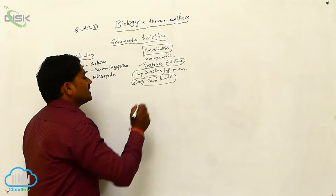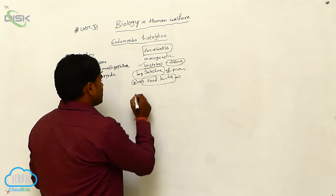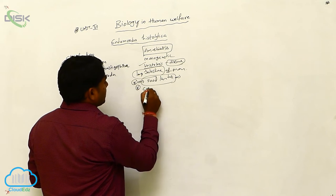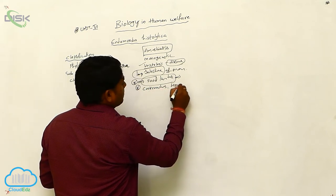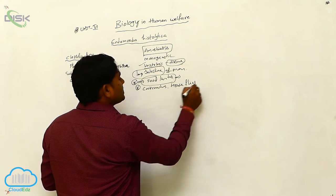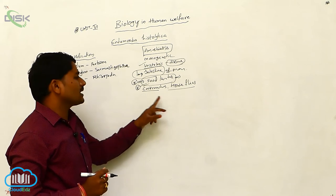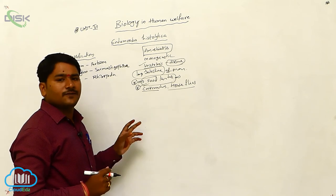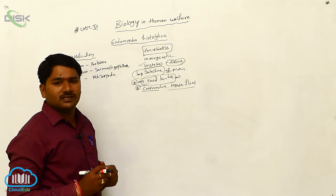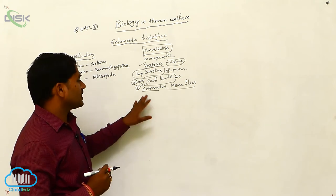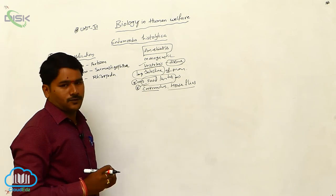This parasite enters into man through contaminated food and water. Cockroaches and house flies are the mechanical vectors which transfer the infective stage — the tetranucleate cyst — to the human host.